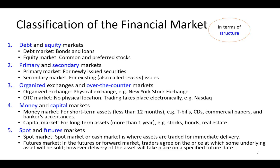We can also describe financial markets in terms of primary and secondary market. The primary market simply describes the financial market for newly issued securities — newly issued stocks and bonds. The secondary market is the market for existing securities, also referred to as seasoned securities or seasoned issues. When you own a stock or bond and at some point decide you want to sell it, that's a secondary market transaction.